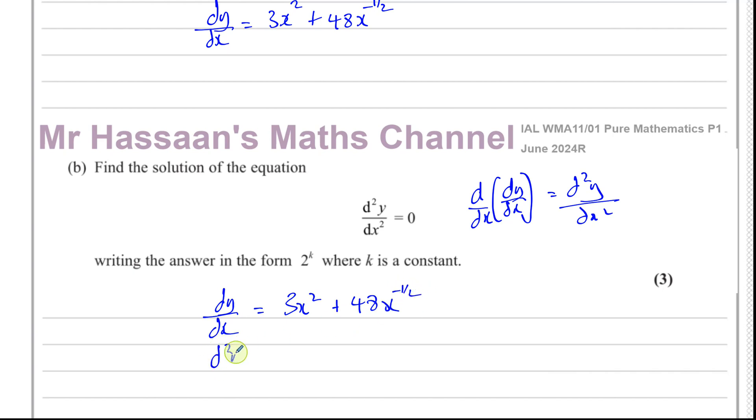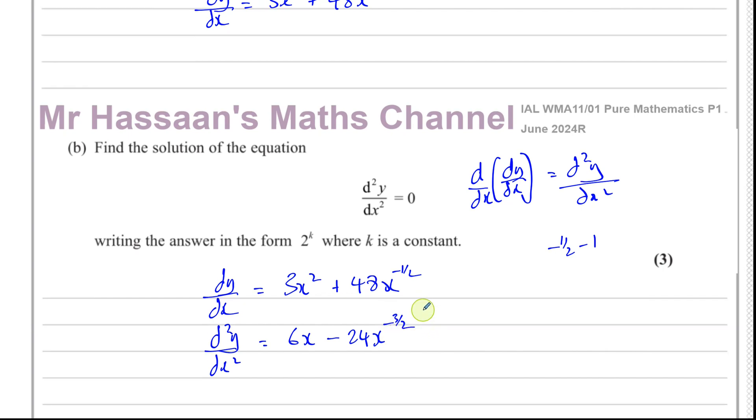So d²y/dx², the second differential: multiply by the power. That gives you 6x. Take one from the power. And here multiply the power, you get negative. Half of 48 is 24. x to the power, take one from negative a half. You get negative three over two. Okay, that's d²y/dx².